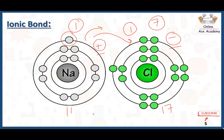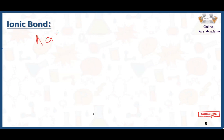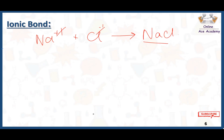Sodium loses the electron and chlorine accepts it. Sodium gets a positive charge (+1) and chlorine gets a negative charge (−1). These two opposite charges cancel each other's effect, and ultimately the ionic bond formed is neutral — it has no charge.